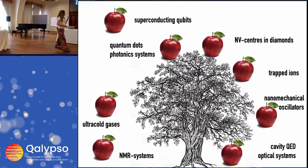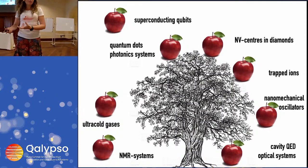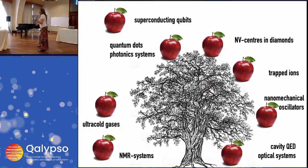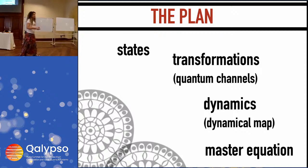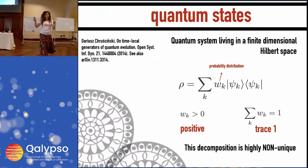Different physical implementations — many of which you will recognize as platforms for quantum computing — suffer different types of noise. The noise is different in some cases with correlations in time, in other cases without, and must be modeled differently depending on the physical system. The plan here is to briefly recall states, transformations, the dynamical map, and the master equation.